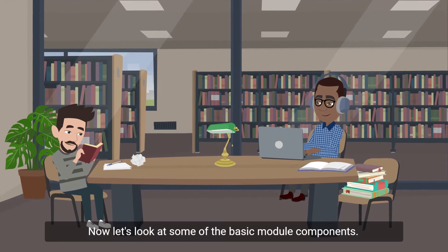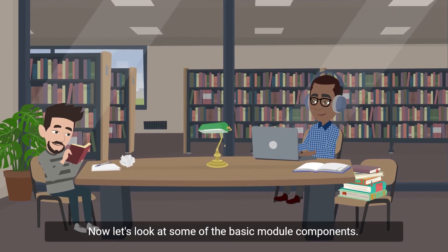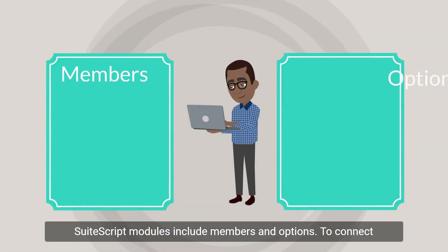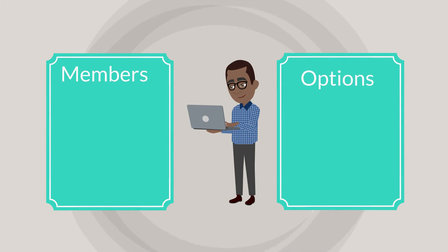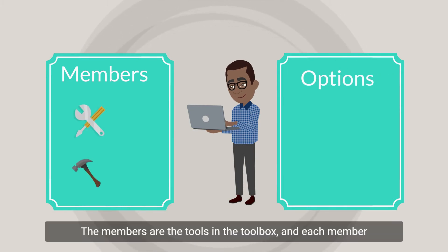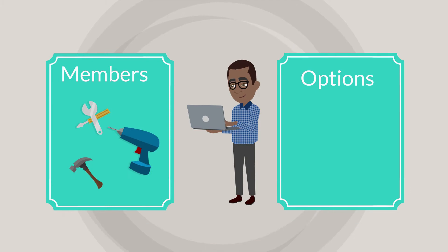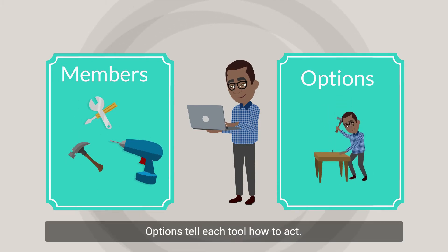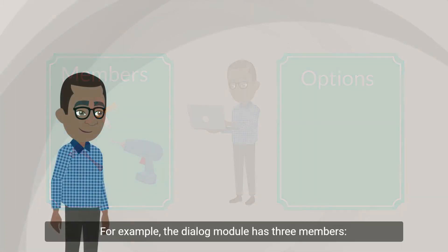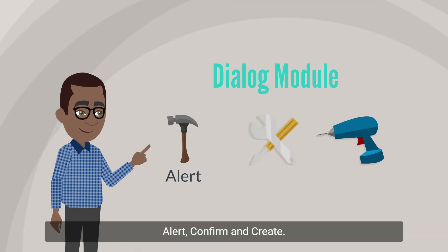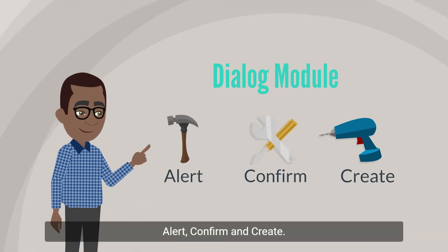Now, let's look at some of the basic module components. SuiteScript modules include members and options. To connect these to our toolbox analogy, the members are the tools in the toolbox and each member has options. Options tell each tool how to act. For example, the dialog module has three members: alert, confirm, and create.